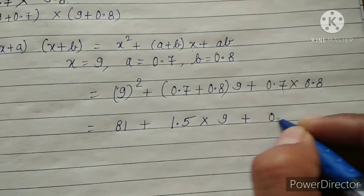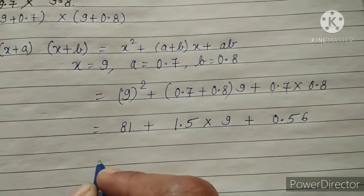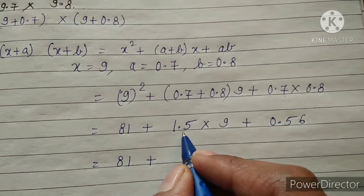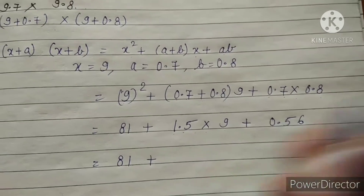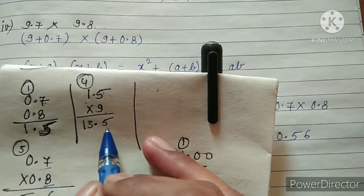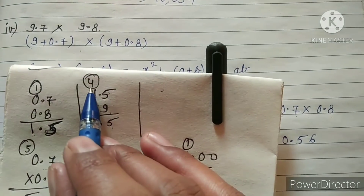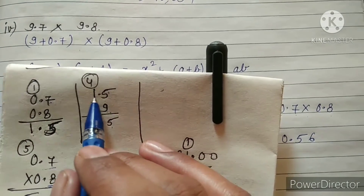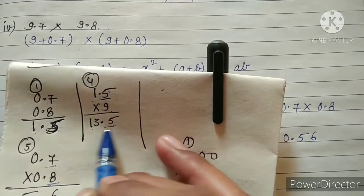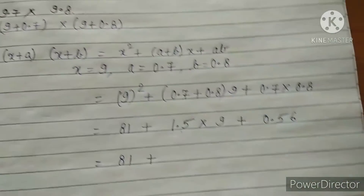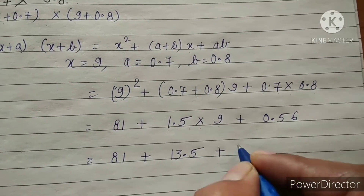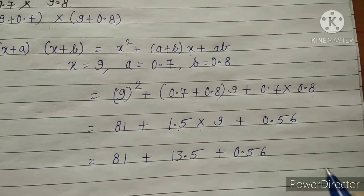We have 0.56. For 1.5 multiplied by 9: 9 fives are 45, write 5 carry 4; 9 ones is 9, plus 4 is 13. After the decimal 1 value, so 1.5 times 9 equals 13.5. Adding together: 81 plus 13.5 plus 0.56.